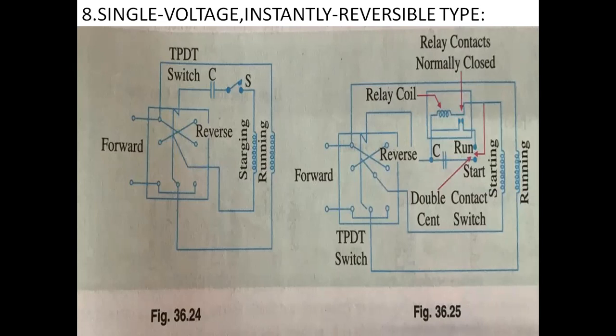The TPDT switch has three poles connected to one base, so they move entirely as one unit in two positions — that is why it is called double throw. In one position of the switch, the motor runs in clockwise direction, and in the other position, it runs in anti-clockwise direction. In this arrangement, it is necessary to wait until the motor stops before changing direction.